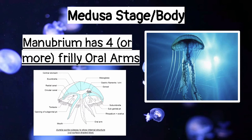A key identifying feature of Scyphozoans on the medusa form is four or more oral arms. If you see oral arms, that's a dead giveaway you're looking at a Scyphozoan. From the manubrium hanging in the middle of the bell, four or more oral arms hang down, while the tentacles appear as thin strings around the outside rim of the bell. The oral arms tend to look frilly, which distinguishes them from the tentacles, though there is variation from species to species.